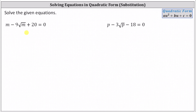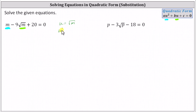Let's see if we can verify the first equation is in quadratic form. Notice if it is in quadratic form, u would be equal to square root of m, and u squared would be equal to m. Let's verify that. If we let u equal the square root of m, then u squared equals the square of the square root of m, which is equal to m. This verifies the given equation is in quadratic form.